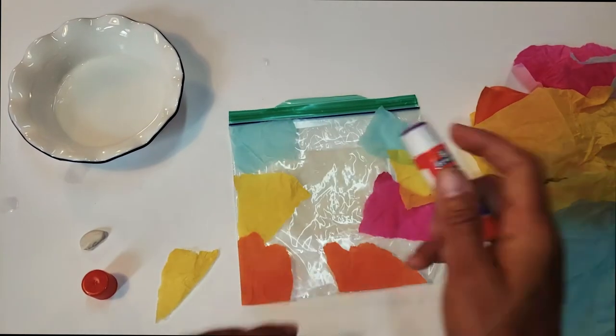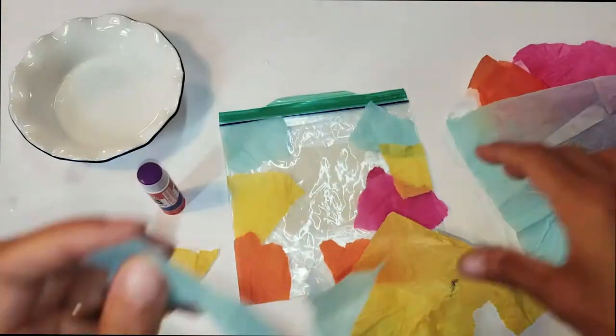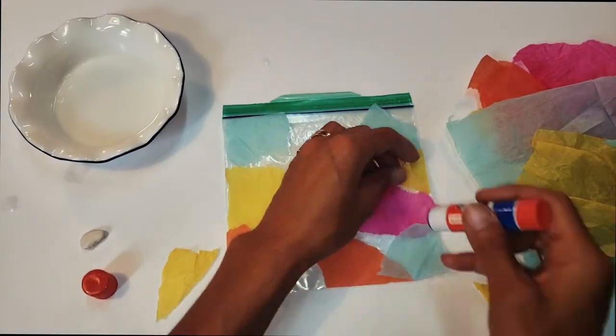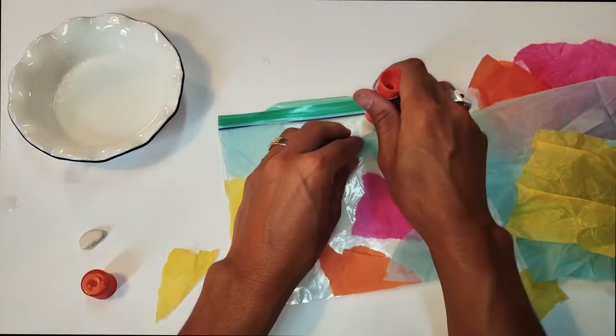While you're gluing, make sure not to go over the pieces of tissue paper too hard because it might rip them. You can glue down your edges in between or you can leave them sticking up. Really, there's no right way to do this.